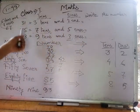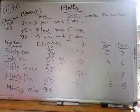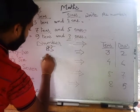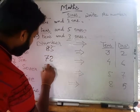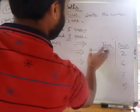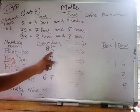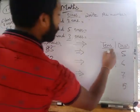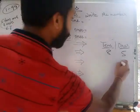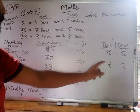Write the number in the tens and ones place value chart. For example, 85: 5 is at the place of ones, so we write 5 there, and 8 is at the place of tens, so we write 8 there. For 72: 2 is at the place of ones, so we write 2, and 7 is at the place of tens — that is why it is 70 — so we write 7 at the place of tens.